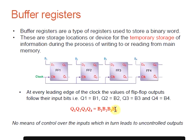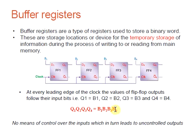There is no control over the inputs, which leads to uncontrolled outputs. That is one of the limitations of buffer registers — it will immediately respond to whatever is given at the input, and there is no control over the inputs as well as the corresponding outputs.